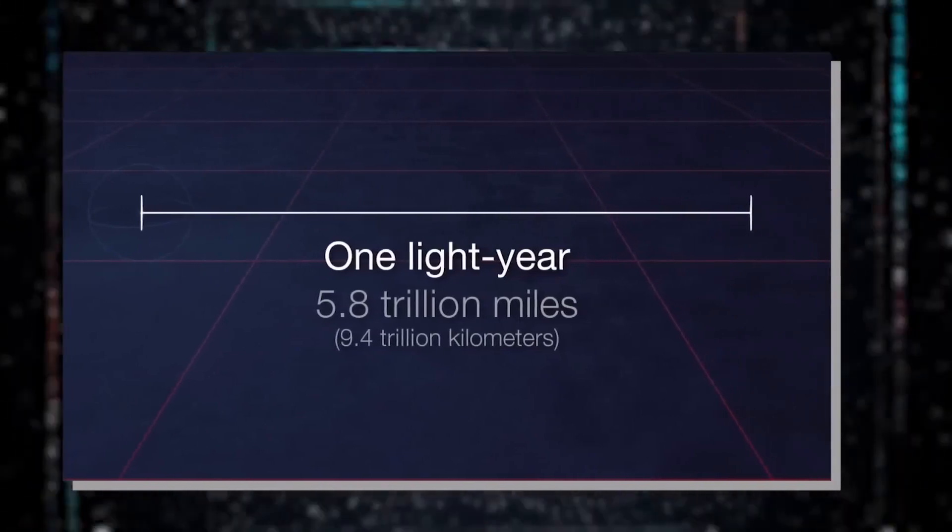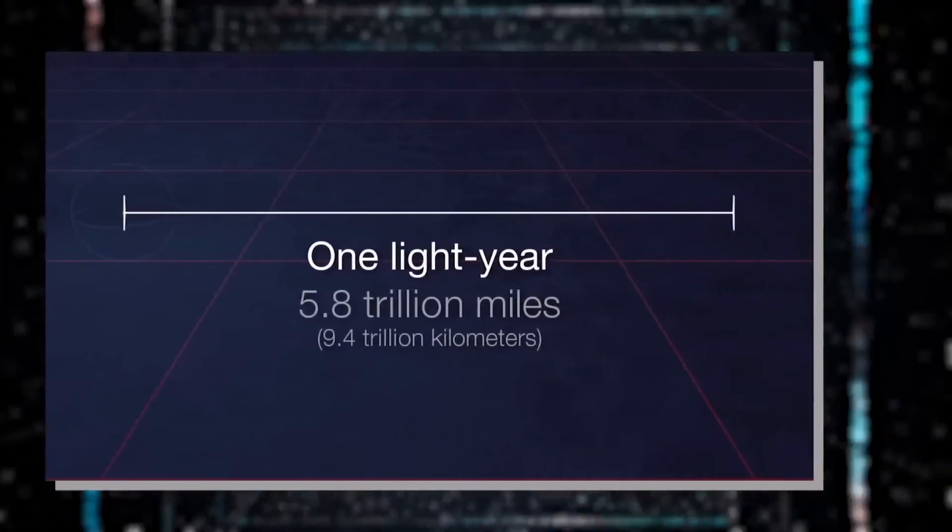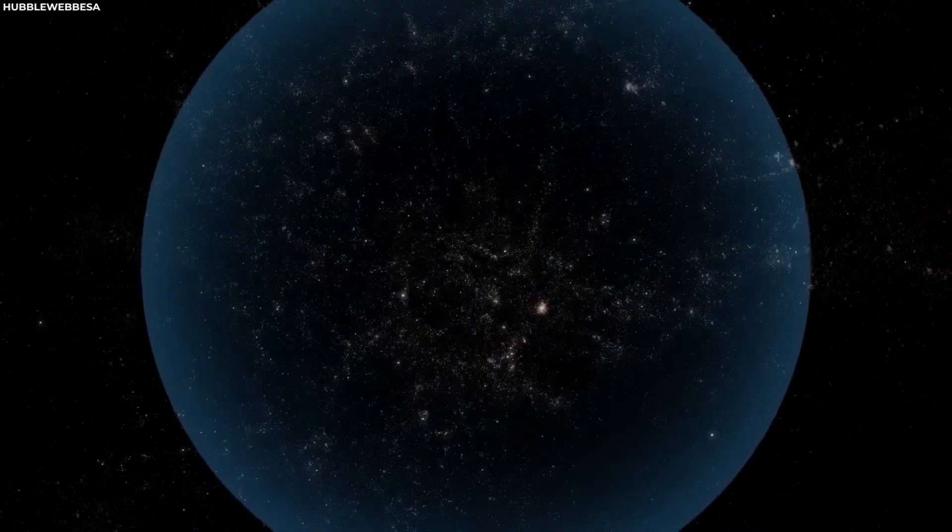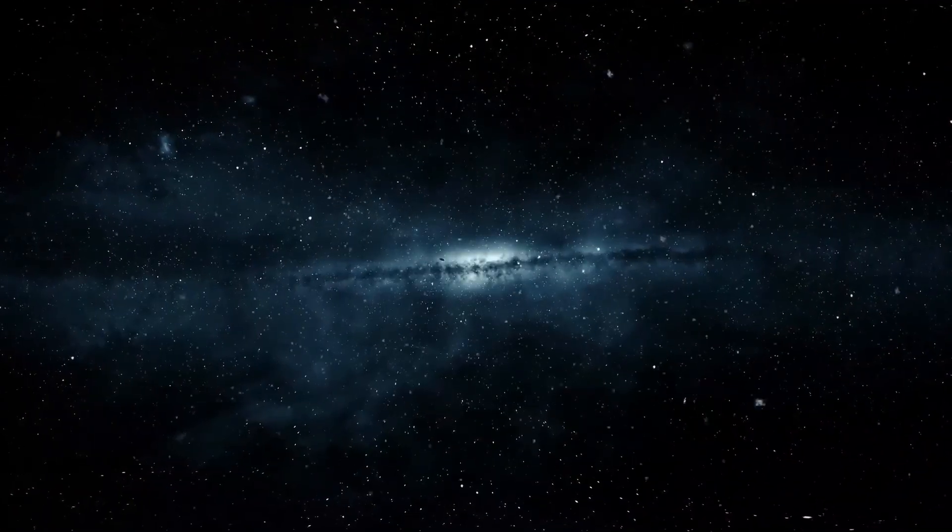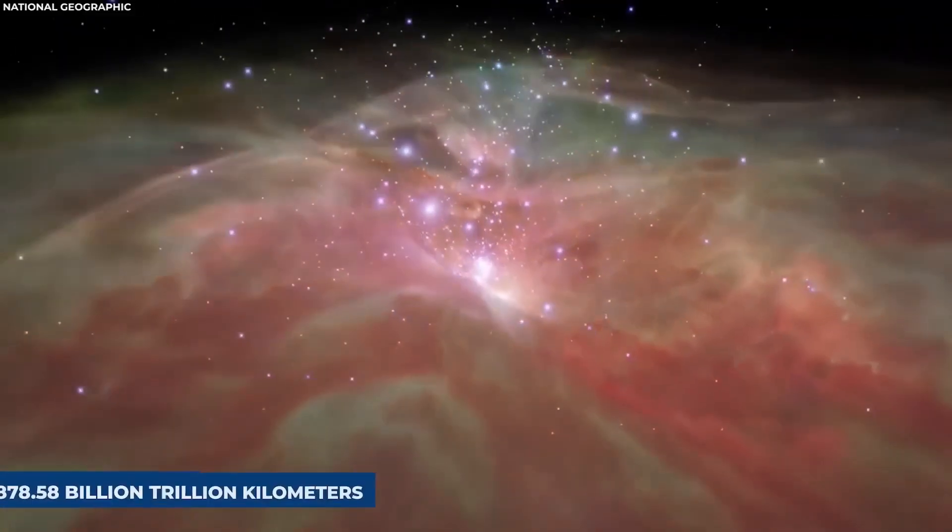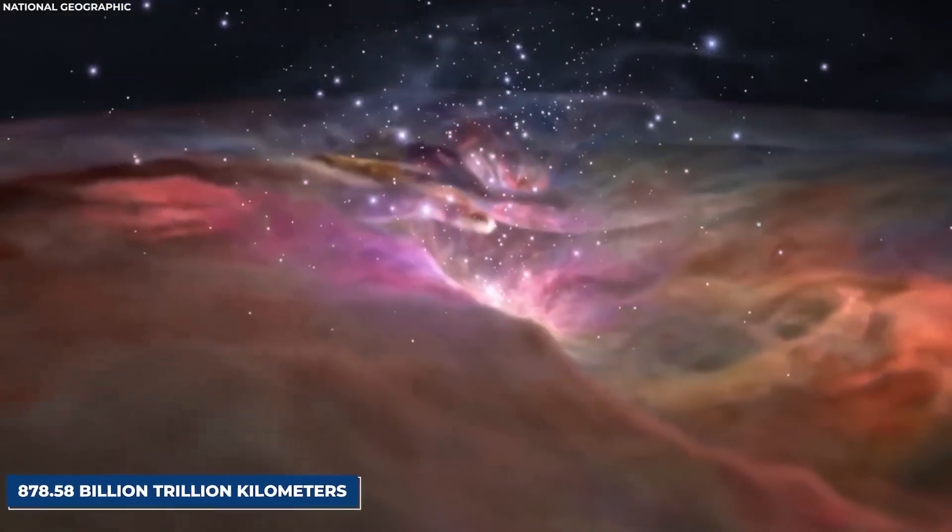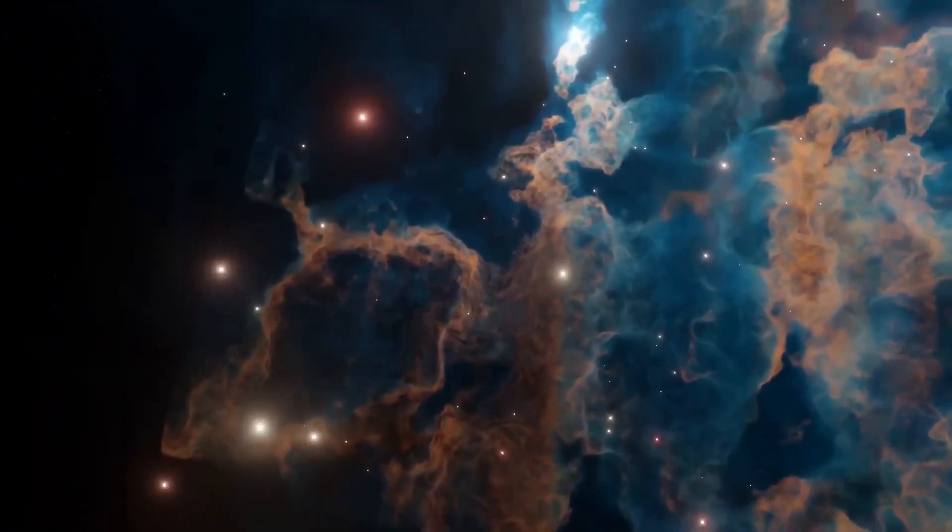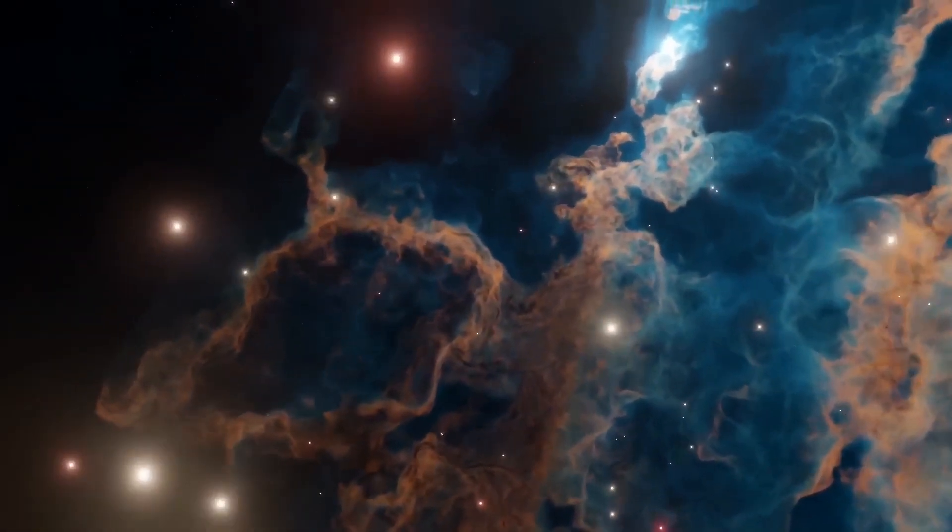The observable universe has a diameter of about 93 billion light-years. Now, a light-year, that's the distance light travels in one year, which is a whopping 5.88 trillion miles or 9.46 trillion kilometers. So, when we talk about 93 billion light-years, we're looking at a distance of about 546.84 billion trillion miles or 878.58 billion trillion kilometers. Mind-blowing, right?